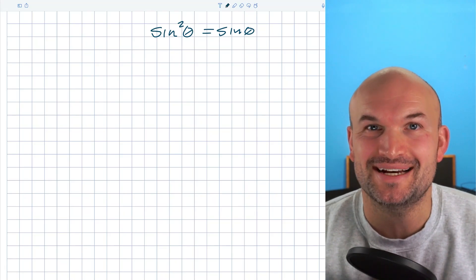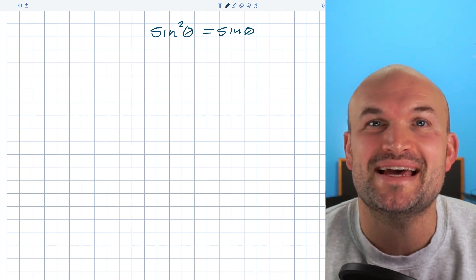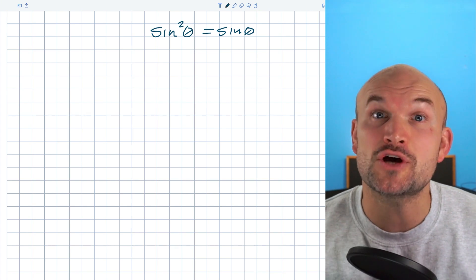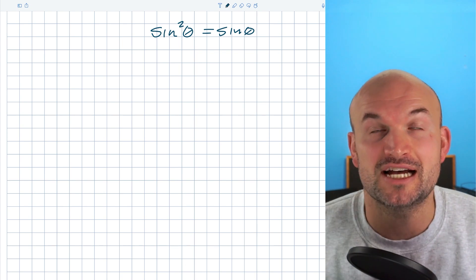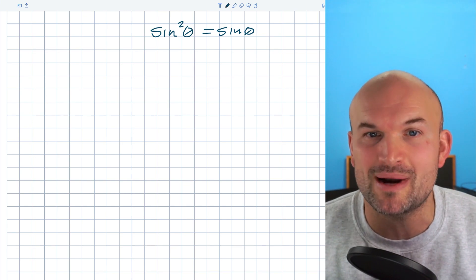So you have sine squared of theta equals sine of theta. This is a problem that I see students make common mistakes on time and time again. What I want to do is show you some of the common mistakes that I see students make so you don't make those same mistakes, as well as how to approach this problem so you can solve it correctly.